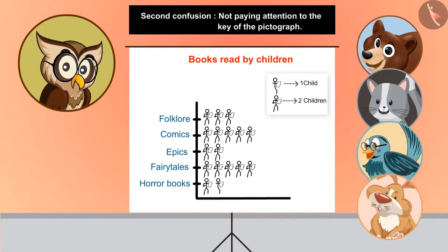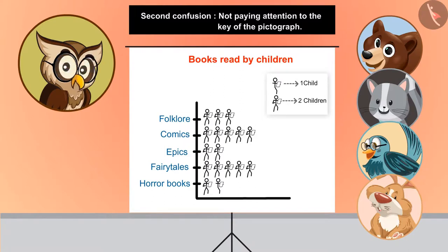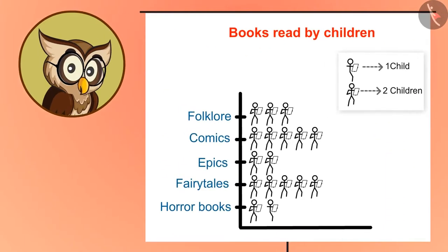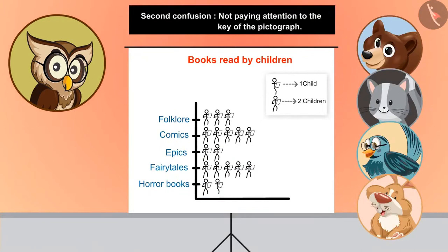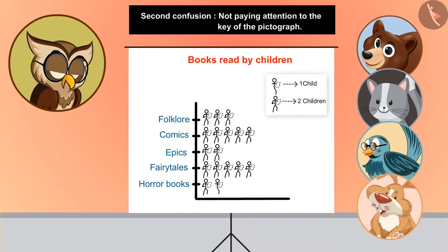Sometimes it has also been seen that while looking for answers from the pictograph, children do not pay attention to the key given on it. In this pictograph, we are showing a relation between children's books and the number of kids who like them. How many kids love fairy tales? 5. Let me say 10. Chi-Chi has rightly answered. We only count the number of pictures but forget to notice the key. Here, each stick man depicts 2 children. So, 5 pictures will depict 10 children.